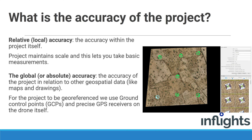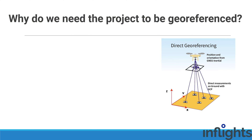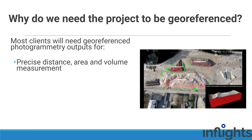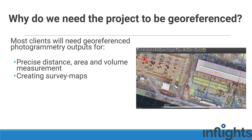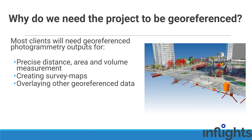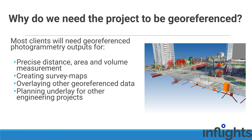For the project to be geo-referenced, we use ground control points (GCPs) and precise GPS receivers on the drone to geo-tag the photos. To use photogrammetric outputs in surveying, construction, planning and architecture, we need to precisely geo-reference the project in a given coordinate reference system. Most clients will need the geo-referenced outputs for precise distance, area and volume measurement, creating survey maps, and overlaying other geo-referenced data as a planning underlay for other engineering projects.